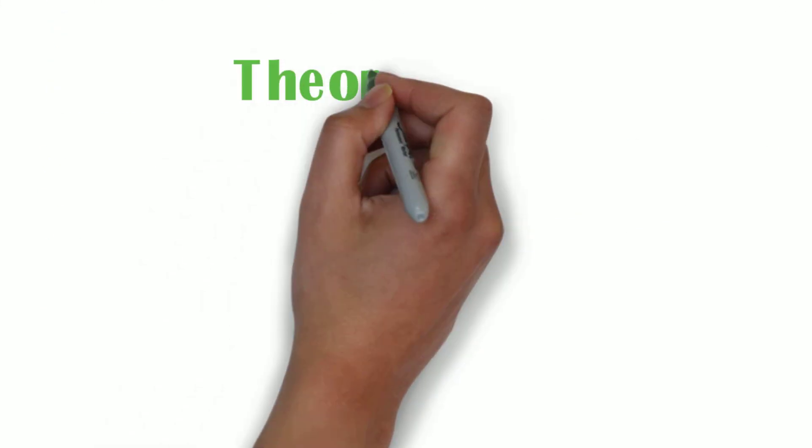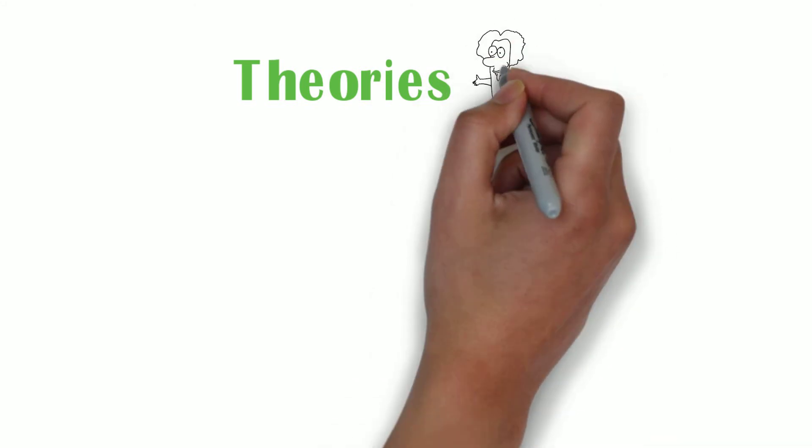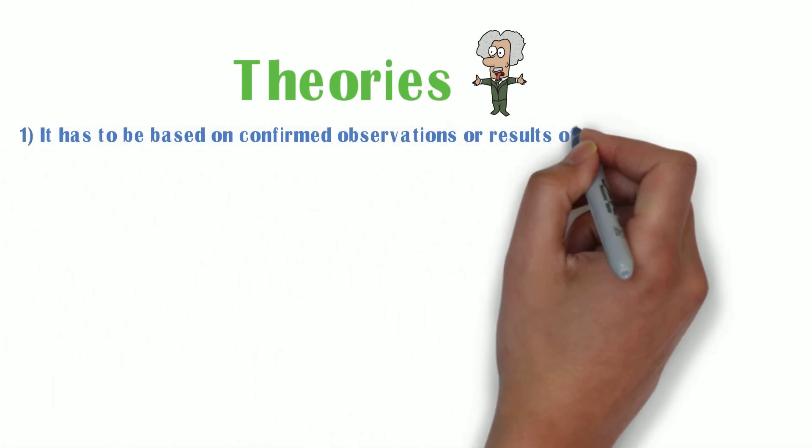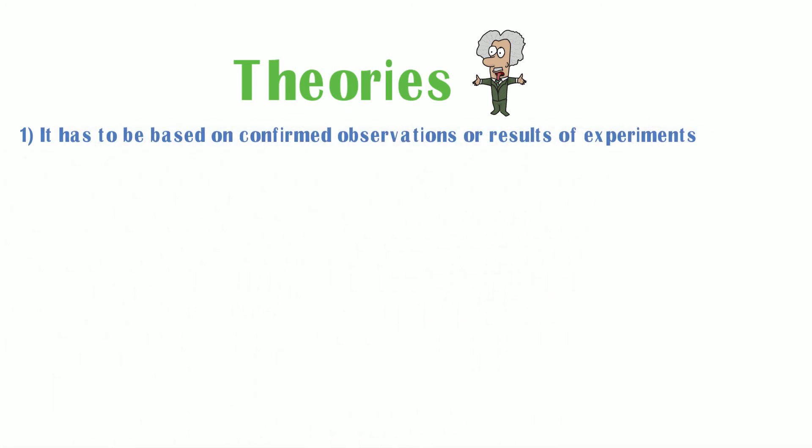All this brings us to theories, which are broader sets of knowledge that seek to explain world phenomena. A theory must be elaborated with the following rules. It has to be based on confirmed observations or results of experiments.